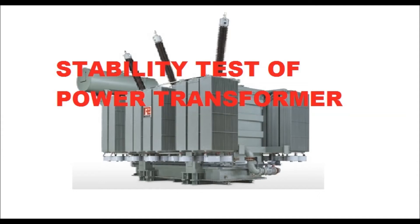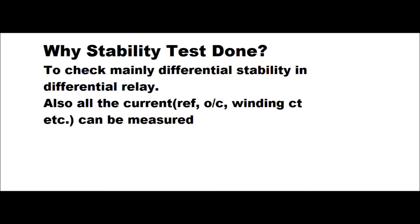In this video we will discuss the stability test of a 50 MVA 132/33 kV YNd1 vector group power transformer. The stability test is done after all other tests, mainly to check the differential stability — the differential current (id) must be zero for all phases. Also, currents for the REF relay, backup overcurrent for HV and LV winding, HV WTI and LV WTI CT secondaries are measured. This is the final test before charging clearance is given.